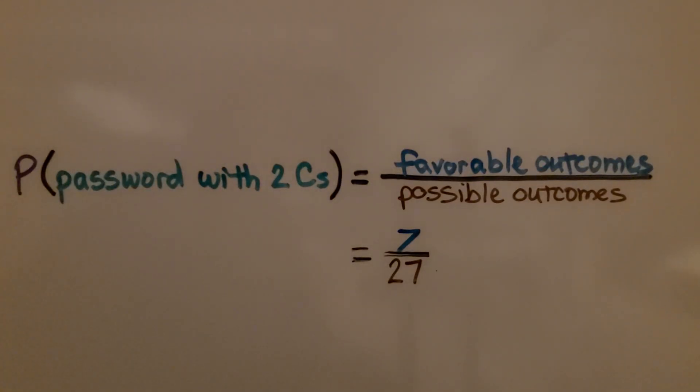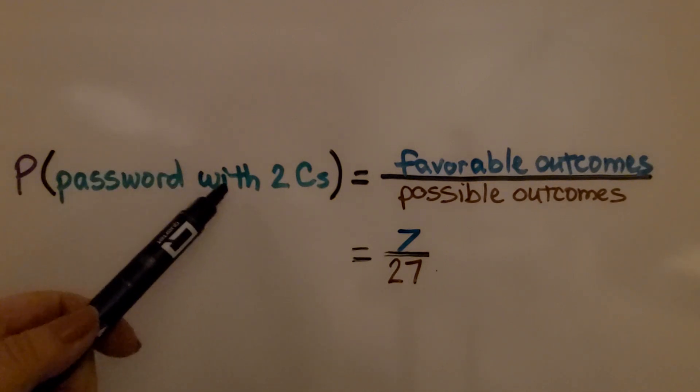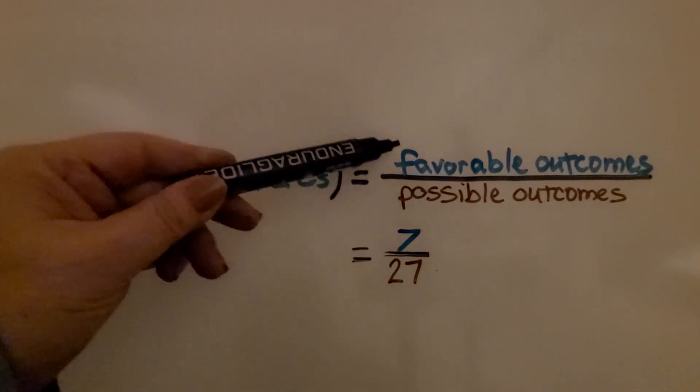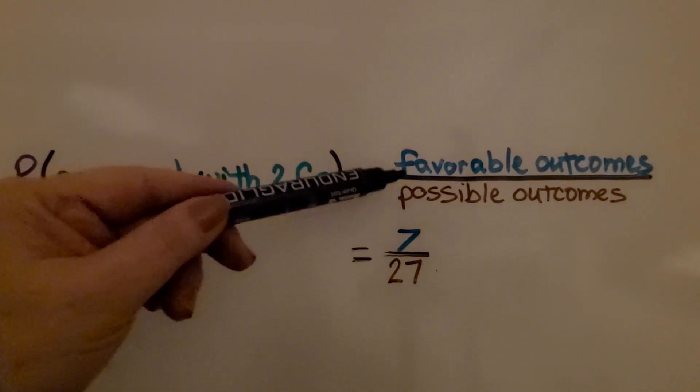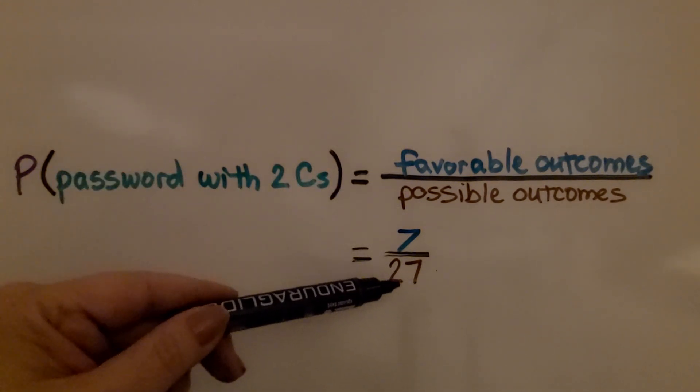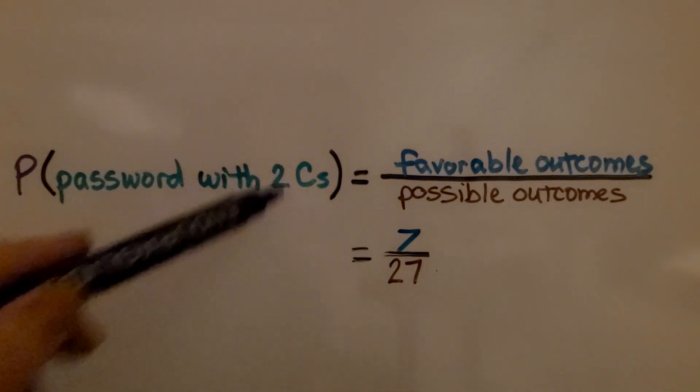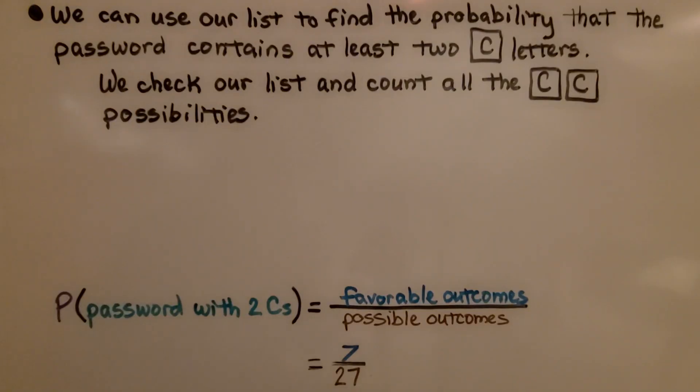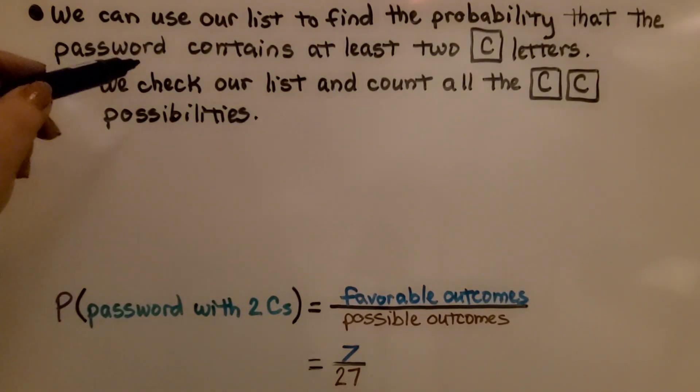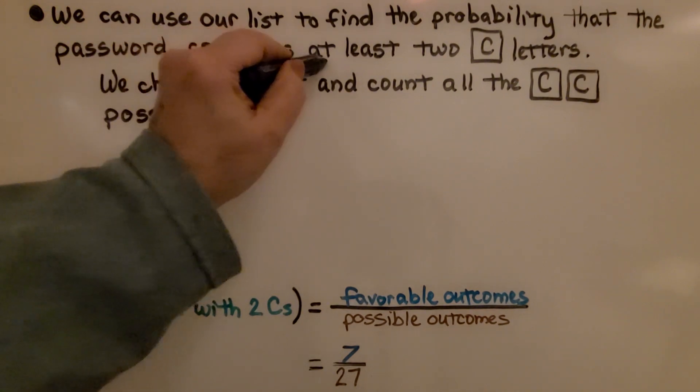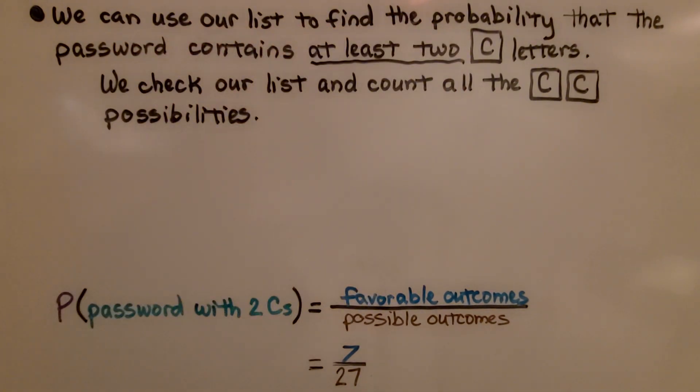So, the probability that a password is going to have two Cs. We have the favorable outcomes, seven, over the possible outcomes. There were twenty-seven passwords. That's seven twenty-sevenths that it will have two Cs in the password. Now, be careful. It said that it would contain at least two. It didn't say exactly two. It said at least two. And we found seven passwords that had at least two. One had three, didn't it? That was our seventh one.